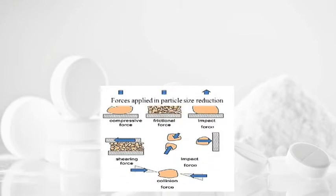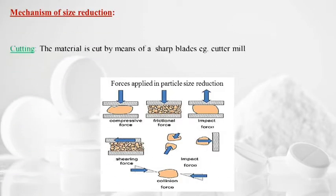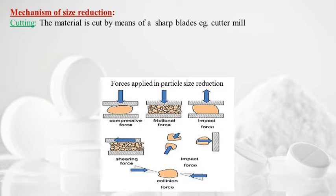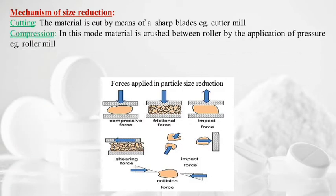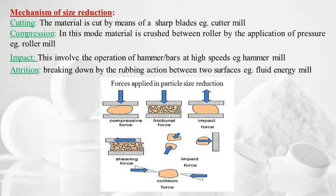The different types of forces applied during size reduction include compressive, frictional, impact, shearing, and collision forces. Mechanisms of size reduction: cutting — material is cut by sharp blades, e.g., in a cutter mill; compression — material is crushed between rollers by pressure, e.g., in a roller mill; impact — hammers and bars operating at high speed, e.g., in a hammer mill; attrition — breaking down by rubbing action between surfaces, e.g., in a fluid energy mill.